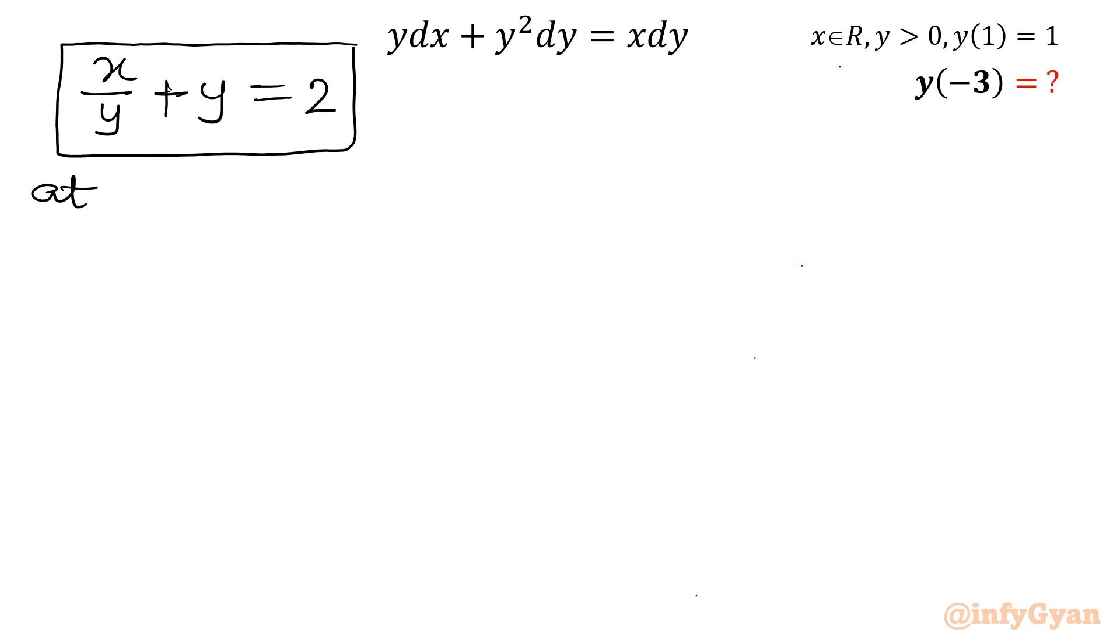At x equals minus 3, the value of y we have to find out. So you will put in place of x, we will apply minus 3. Negative 3 over y plus y equals 2. Multiply this equation by y, so it will give us minus 3 plus y squared equals 2y.